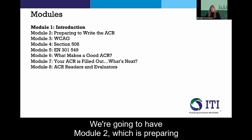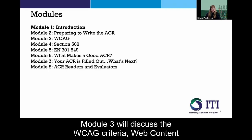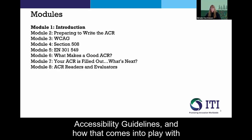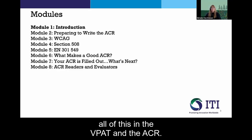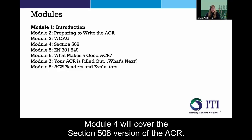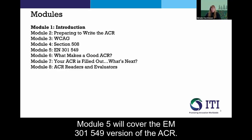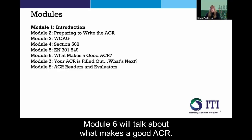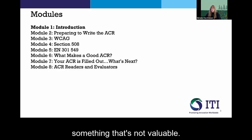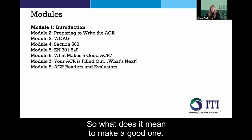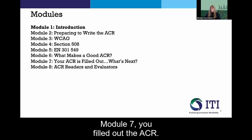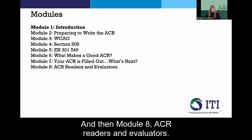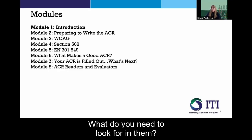Module 2 is about preparing to write the ACR. Module 3 discusses the WCAG criteria — Web Content Accessibility Guidelines — and how that comes into play with the VPAT and ACR. Module 4 covers the Section 508 version of the ACR. Module 5 covers the EN 301 549 version of the ACR. Module 6 talks about what makes a good ACR, because you can fill it out and still have something that's not valuable. Module 7 covers what to do after you've filled out the ACR — what's next. And Module 8 is for ACR readers and evaluators — people who consume rather than write them, and what they need to look for.